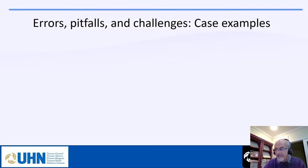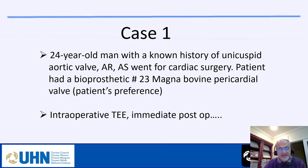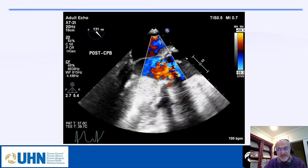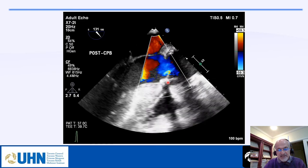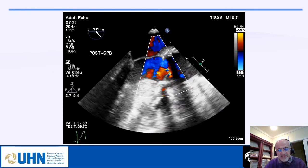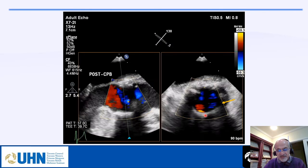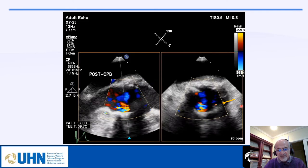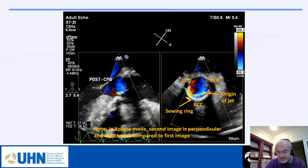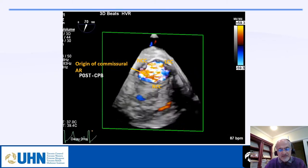Let me show examples of errors, challenges, and pitfalls. Case one: a 24-year-old man with known unicuspid aortic valve who had a bioprosthetic aortic valve replacement — the bioprosthetic choice was at the patient's request. In the immediate post-op TEE there is aortic insufficiency. The question is always: is it valvular or paravalvular? Using Xplane, you can see the sewing ring, and the AI is coming from inside the sewing ring as two jets — so it is transvalvular, a very common finding with the Magna valve.